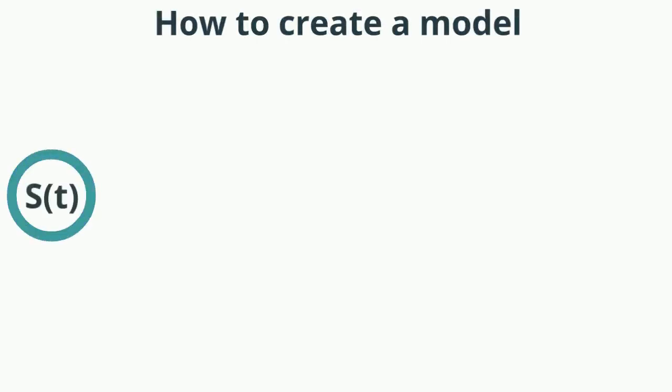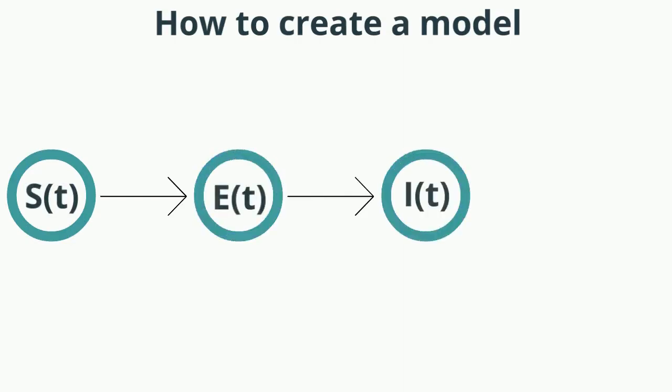That means we have a susceptible state for those people not infected, an exposed state for people who are asymptomatic, an infected state where people are showing symptoms, and finally a recovered state. We can use this model to predict the future for each of those states.